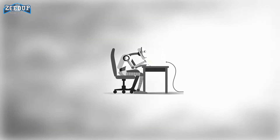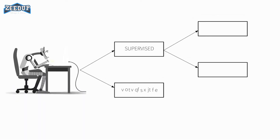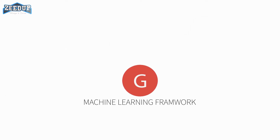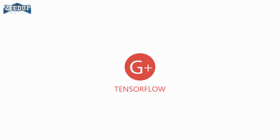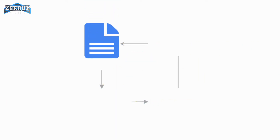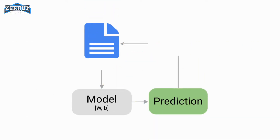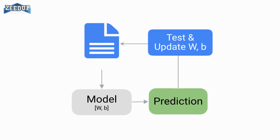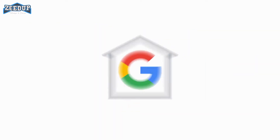Machine learning is a complex discipline. But implementing machine learning models is far less daunting and difficult than it used to be, thanks to machine learning frameworks such as Google's TensorFlow that eased the process of acquiring data, training models, serving predictions, and refining future results. Created by the Google Brain team,